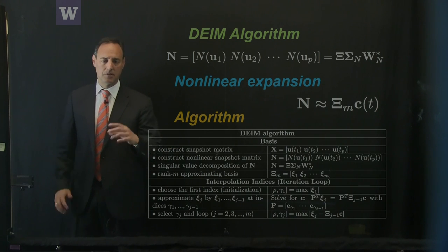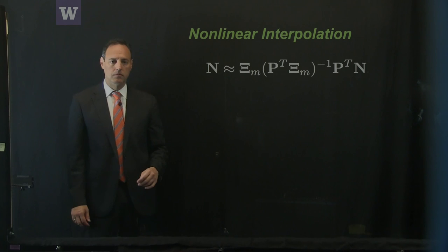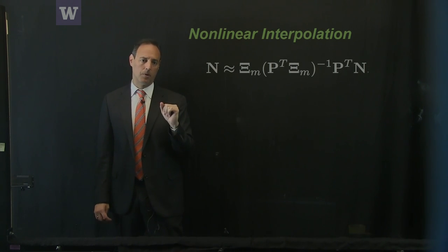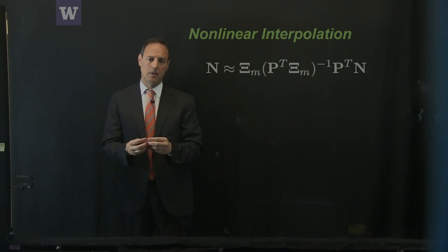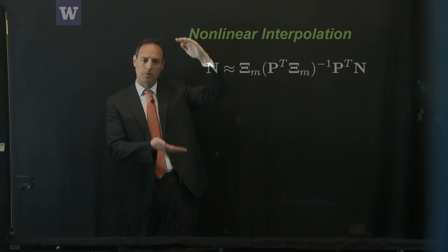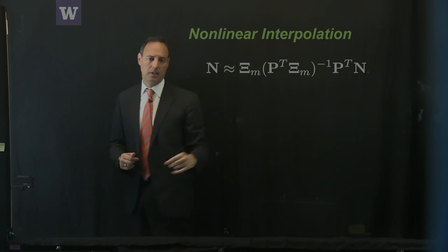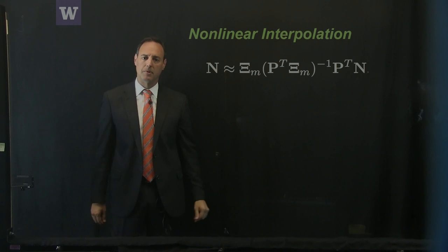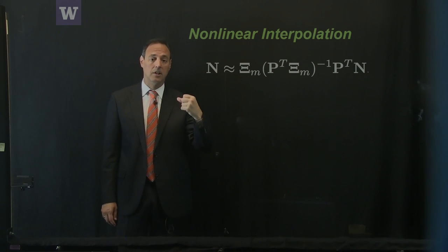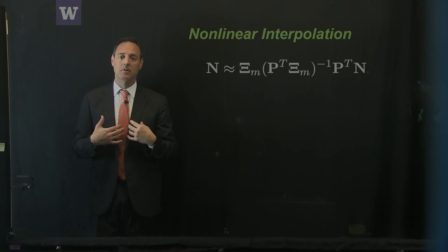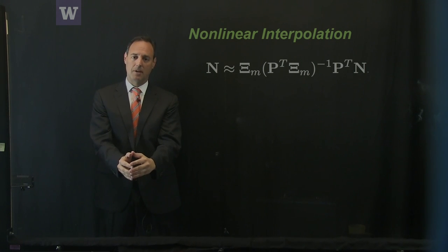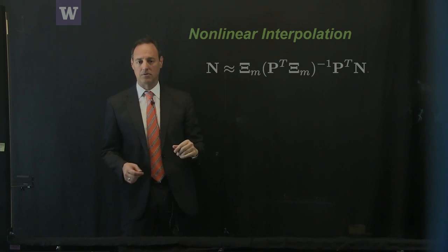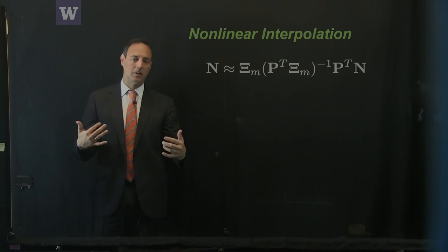The DEIM algorithm is heavily used. The goal is to evaluate the nonlinearity in a low-rank way — projecting all nonlinear terms into a low-dimensional space. Instead of inner products on very high-dimensional vectors, I produce inner products on small vectors. These interpolation points mean I don't have to sample the whole high-dimensional system; I sample some low-dimensional system to get an accurate prediction of the nonlinear terms. This is the second major innovation in reduced order modeling — not just finding a low-dimensional subspace, but also evaluating the nonlinear term without high-dimensional inner products.